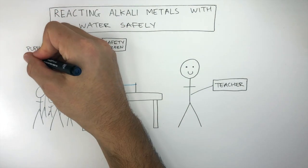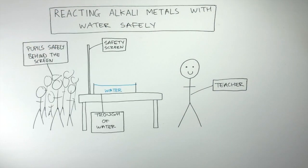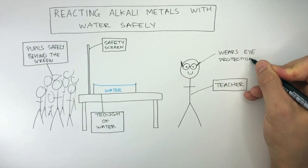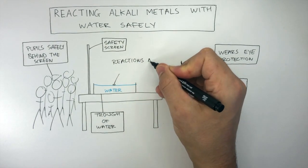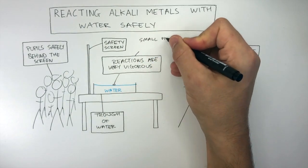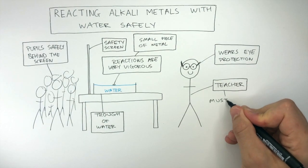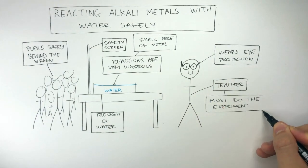The pupils are safely behind the screen and are protected from the glass trough potentially breaking if the reaction is too vigorous. The eyes must be protected, so the teacher wears eye protection. The reactions are very vigorous, so a small piece of metal must be used. The teacher must do the experiment as the reaction has the potential to be quite dangerous.